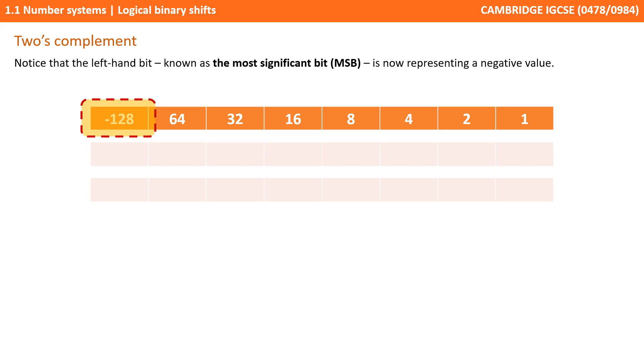You'll notice that when using the 2's complement method, the most significant bit, the MSB, so that's the left most bit, now represents a negative value. So we've gone 16, 32, 64, and instead of the left column representing 128, it now represents minus 128.